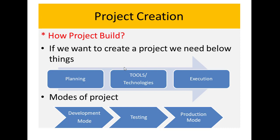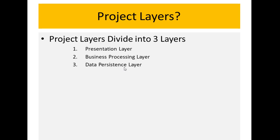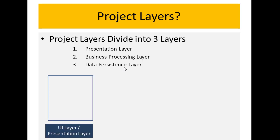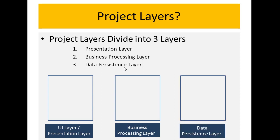Now let's talk about the UI layer, which means project layers. There are three types of project layers — one project is divided into three layers. This is our main topic. First, we have the presentation layer, which is also called the UI layer. Then we have the business processing layer. Third, the data persistence layer.